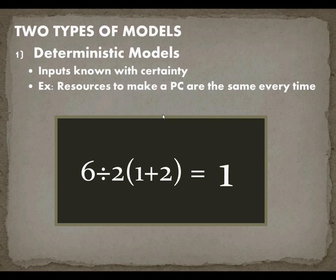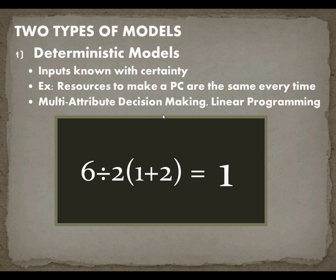If all of a sudden it was using 0 or using 2, I know there's some form of problem. In this course, multi-attribute decision-making and linear programming are deterministic models that we're going to cover.